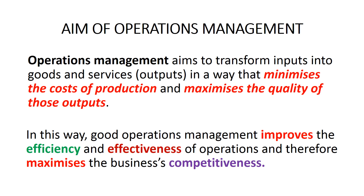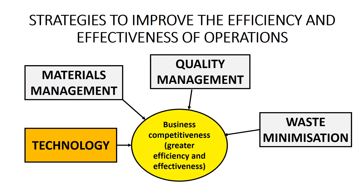There are four types of operations management strategies that can be used to improve the efficiency and effectiveness of a business's operations: technology strategies, materials management strategies, quality management strategies, and waste minimization strategies. In this video we will be looking at technology strategies.